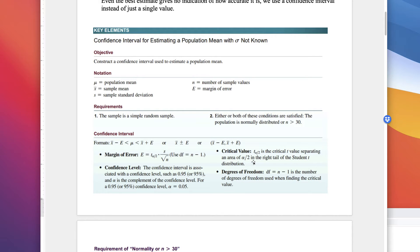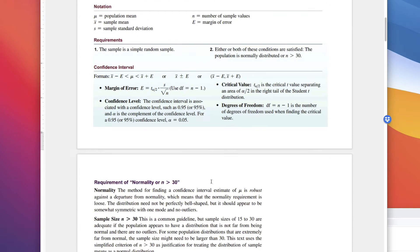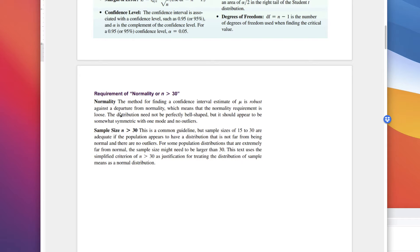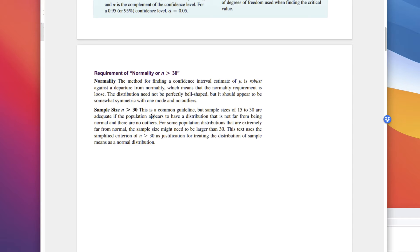The critical value separates an area of alpha over 2 in the right tail of the Student t-distribution. Degrees of freedom is n minus 1. The t-distribution is robust against departure from normality, meaning the normality requirement is loose — the distribution need not be perfectly bell-shaped, but should appear somewhat symmetric with no outliers. Sample size n greater than 30 is a common guideline, but sizes of 15 to 30 are adequate if the population appears not far from normal with no outliers.